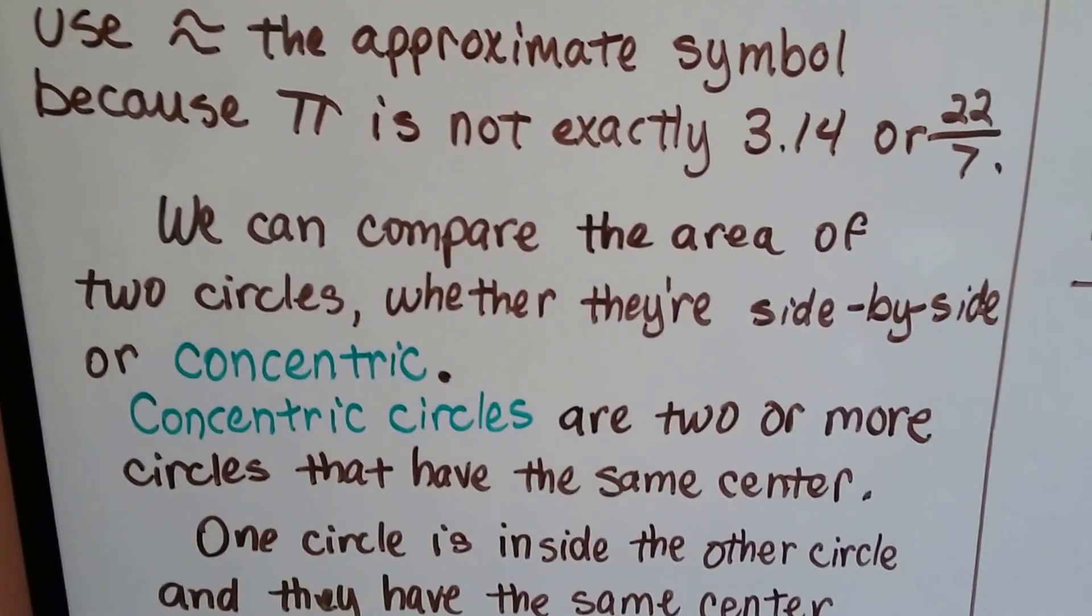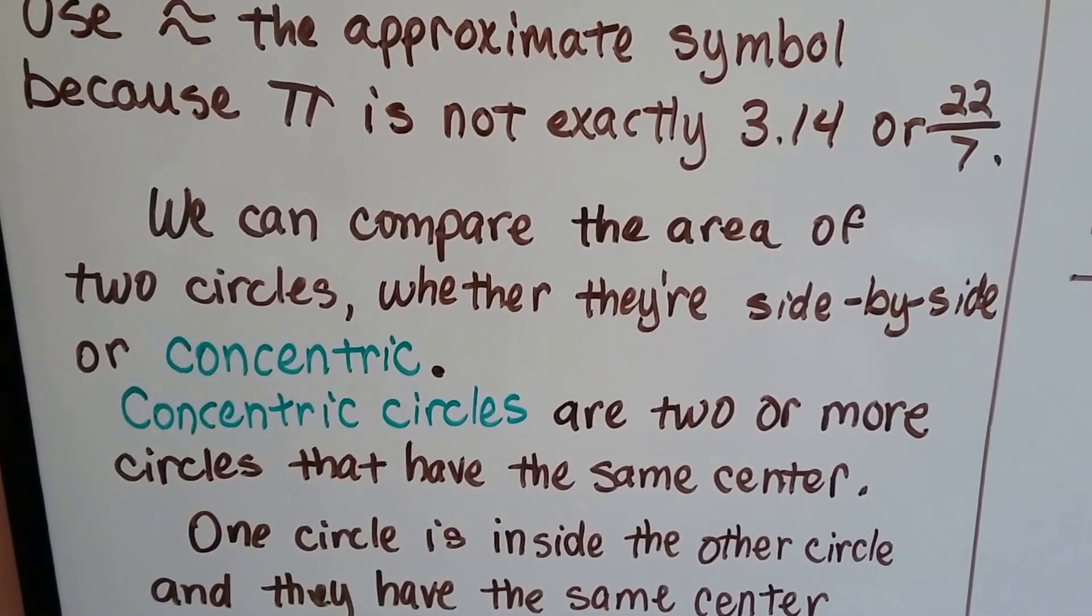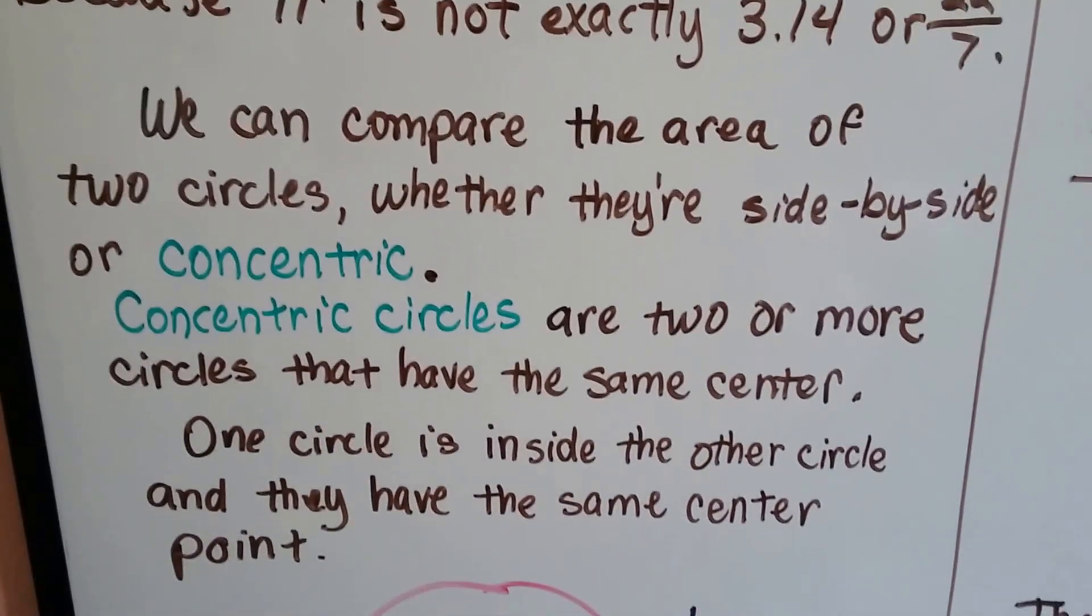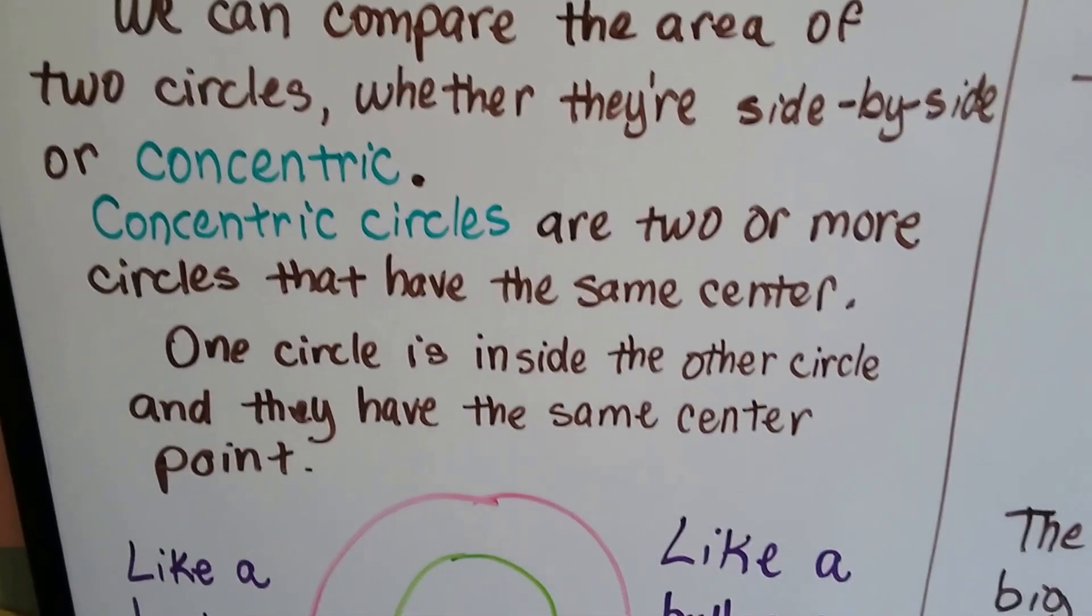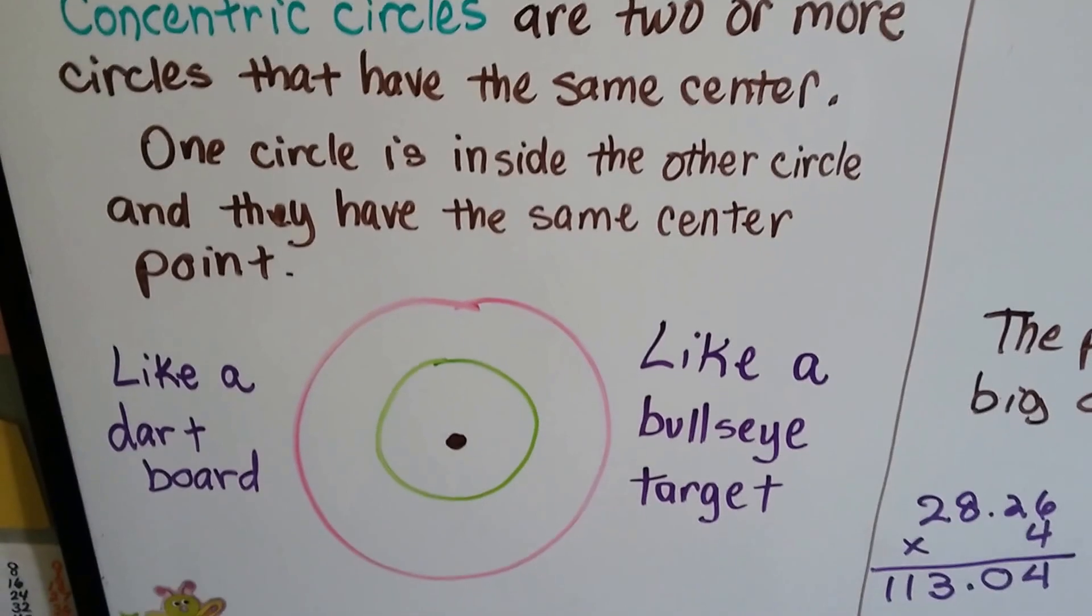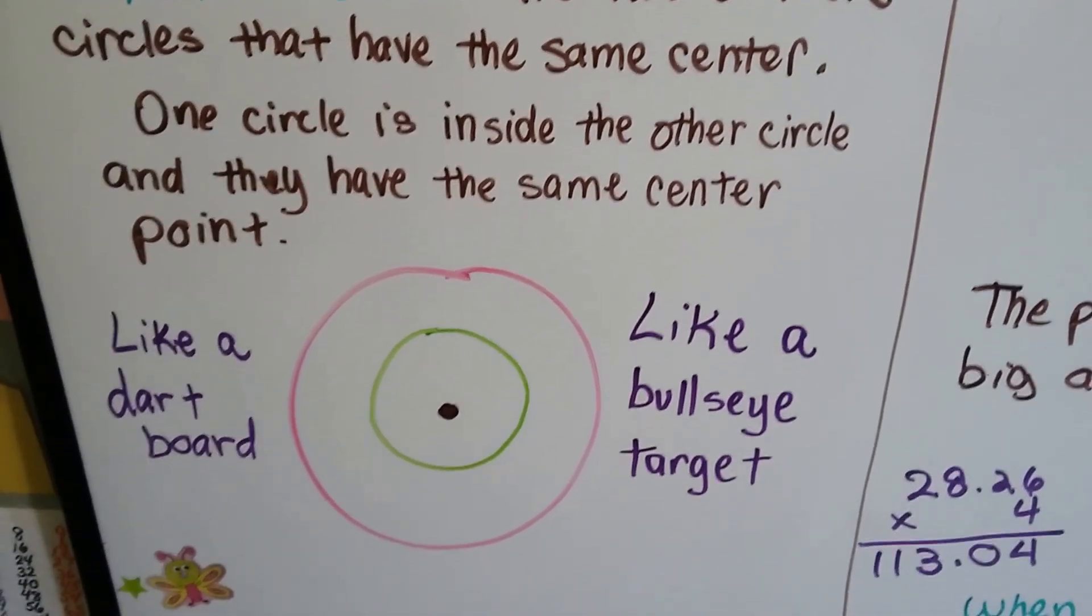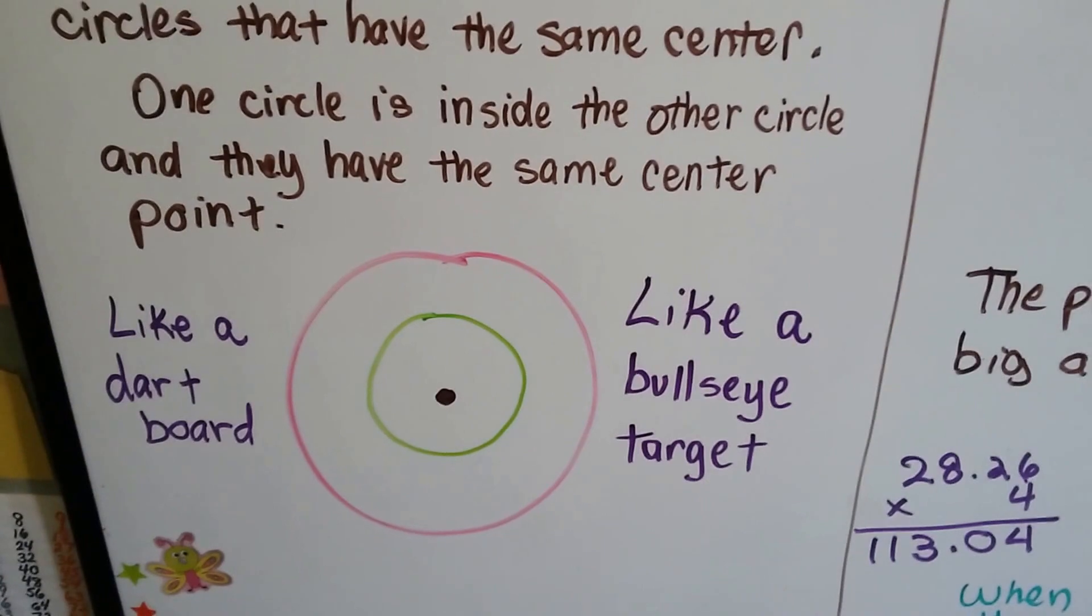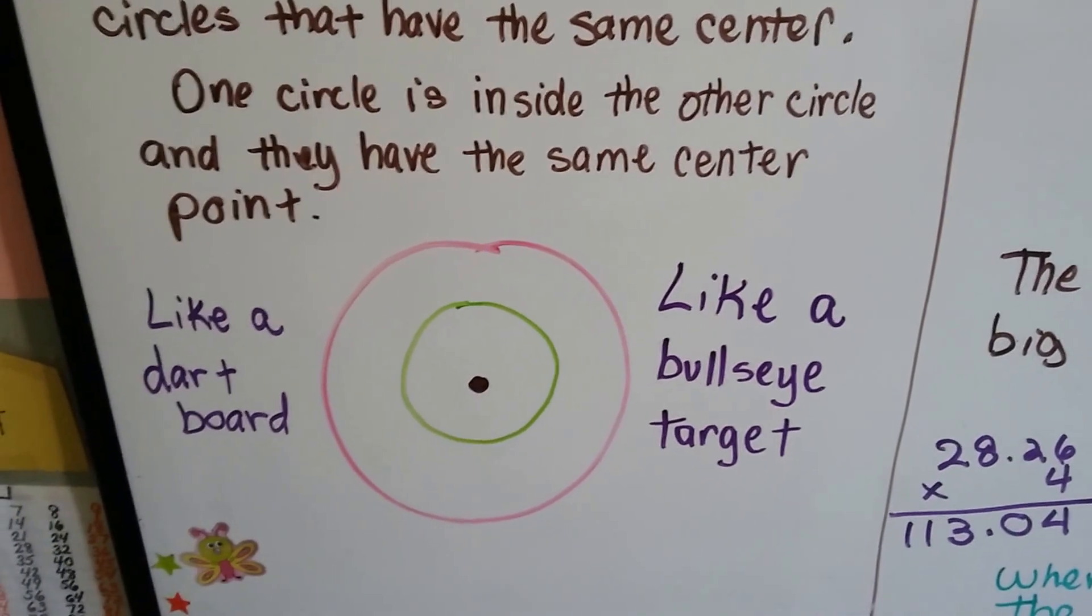We can compare the area of two circles, whether they're side-by-side or concentric. Concentric circles are two or more circles that have the same center. One circle is inside the other circle, and they have the same center point. It's like a dartboard or like a bullseye target.